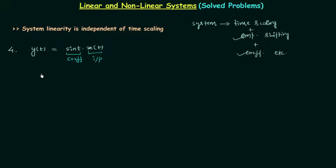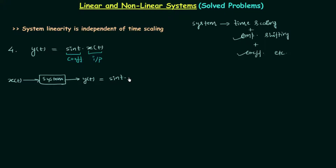It is always good to find out the functionality of the system first. Our system takes input x(t) and produces output y(t). The functionality of the system is multiplying sin(t) to the input x(t), so output y(t) = sin(t) · x(t). Here the coefficient sin(t) is not constant — it is a function of time.